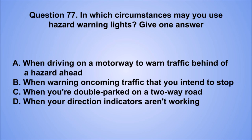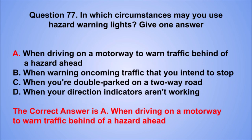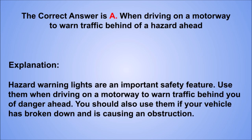Question 77. In which circumstances may you use hazard warning lights? Give one answer. A. When driving on a motorway to warn traffic behind of a hazard ahead. B. When warning oncoming traffic that you intend to stop. C. When you're double parked on a two-way road. D. When your direction indicators aren't working. The correct answer is A, when driving on a motorway to warn traffic behind of a hazard ahead. Hazard warning lights are an important safety feature. Use them when driving on a motorway to warn traffic behind you of danger ahead. You should also use them if your vehicle has broken down and is causing an obstruction.